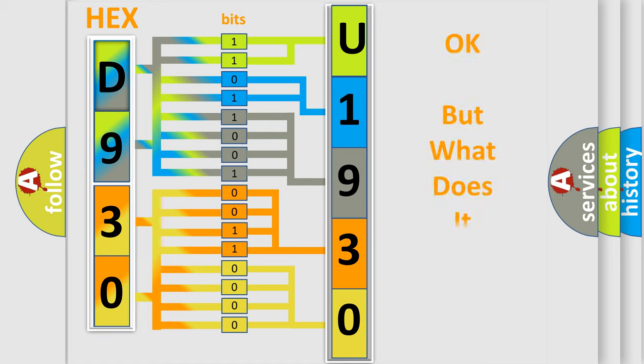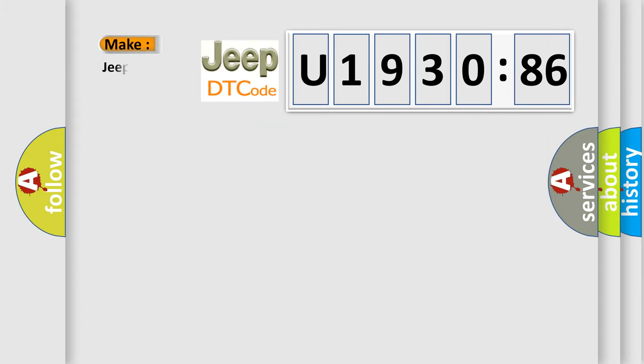The number itself does not make sense to us if we cannot assign information about what it actually expresses. So, what does the diagnostic trouble code U193086 interpret specifically for Jeep car manufacturers? The basic definition is